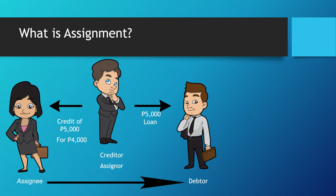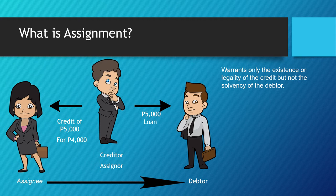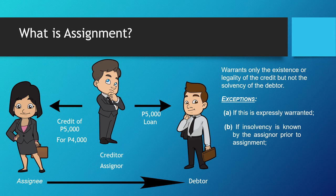The assignor warrants only the existence or legality of the credit, but not the solvency of the debtor. An exception to this rule is: first, if the debtor's solvency is expressly warranted; second, if insolvency is known by the assignor prior to the assignment; or third, if the insolvency prior to the assignment is common knowledge.